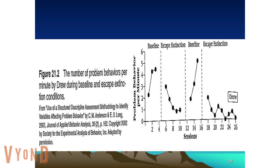Figure 21.2 in your book looks at the number of problem behaviors per minute by a client named Drew during baseline and escape extinction conditions. During baseline the behavior is slightly elevated; when escape extinction is implemented — meaning the behavior he's exhibiting to get out of a task is no longer reinforced — you see a gradual decrease. Going back to baseline, the behavior increases again, and then implementing the escape condition again, the behaviors start to decrease.